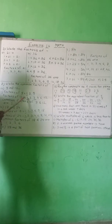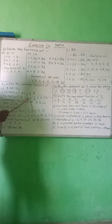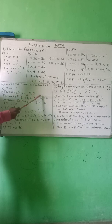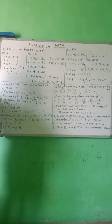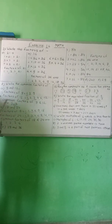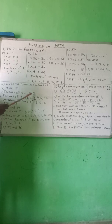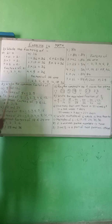Then, factors of 12: 1 is a factor of every number. 2 times 6 is 12. 3 times 4 is 12. 4 times 3 is 12. 6 times 2 is 12. 12 times 1 is 12. Therefore, the common factors of 9 and 12 are 1 and 3. Except 1 and 3, no others are common, so write 1 and 3.